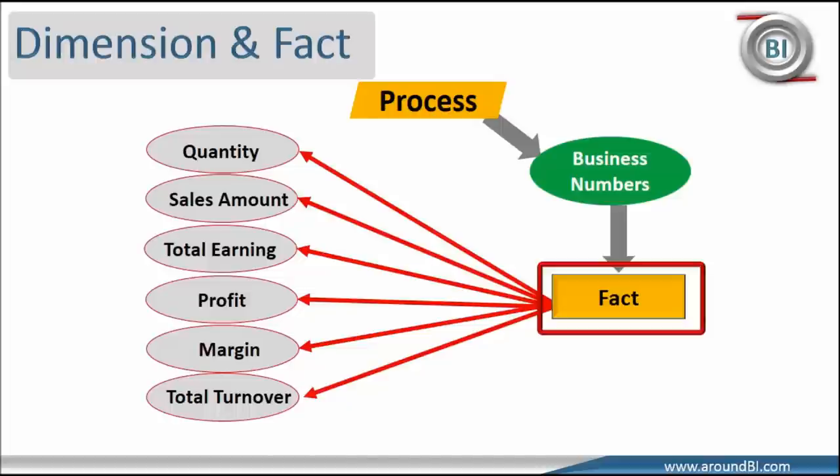Clearly, quantity and sales amount are primary target of computation and are good candidates for facts. They are providing metrics for retail business. For example, quantity sold by month or sales amount by product by date.